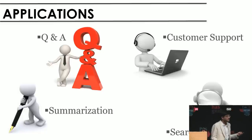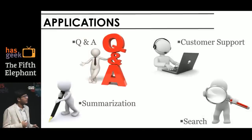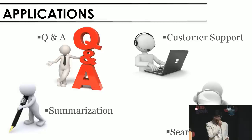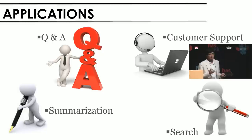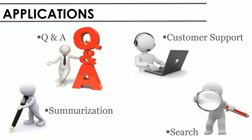I've listed down here some of the applications. Search, when you think about it, is all about NLP. An ideal search engine will try to understand the query of the user, and then map it to the relevant document. Customer support — today, thousands of people send emails to companies, and a team of hundreds of people go there, understand the email, and try to solve the problem. Even that has a lot of scope for efficiency. Question and answers — answers to most of our questions are out there on the internet. Sentiment analysis has also become a big deal nowadays.